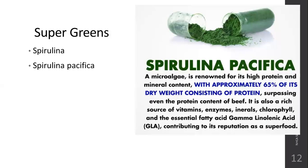Spirulina pacifica is another type of spirulina, but with a higher protein value. It is a microalgae renowned for its high protein and mineral content, with approximately 65% of its dry weight consisting of protein — surpassing even the protein found in red meat like beef. It is also a rich source of vitamins, enzymes, minerals, chlorophyll, and essential fatty acids, which is why it is considered a superfood. Up to 70% of it is protein, and no other food contains this amount of protein.